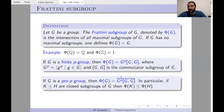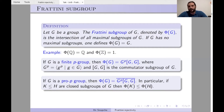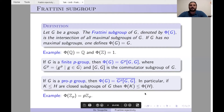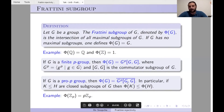Frattini is nice for finite p-groups and pro-p groups because if K is a subgroup of H, then Φ(K) is a subgroup of Φ(H) — so Frattini is order-preserving. As an example of a pro-p group, consider the ring of p-adic integers ℤ_p. The Frattini of ℤ_p is pℤ_p, since the commutator is trivial and G^p = pℤ_p.